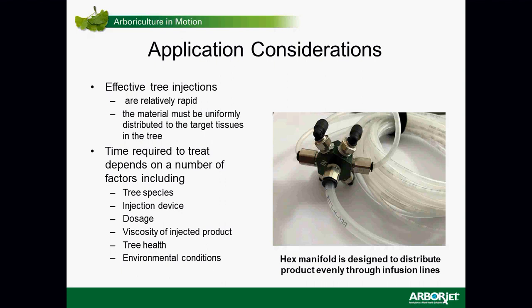One thing manufacturers can do to achieve uniform canopy distribution is how they configure their equipment. One new configuration uses a manifold — a hex manifold that minimizes lack of uniformity in distributing the product, as opposed to a daisy-chain arrangement. From one central point, solution goes into distribution lines more evenly.